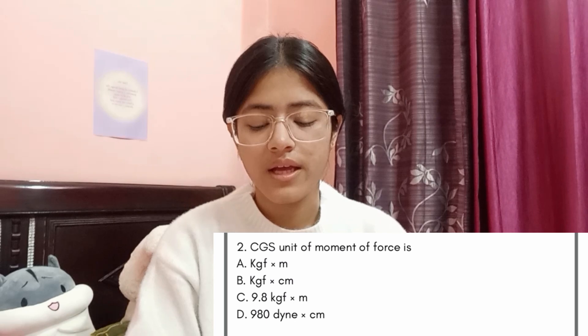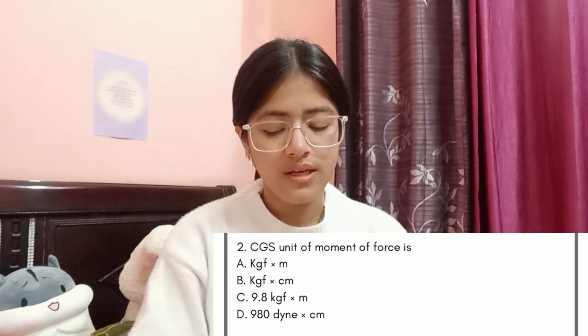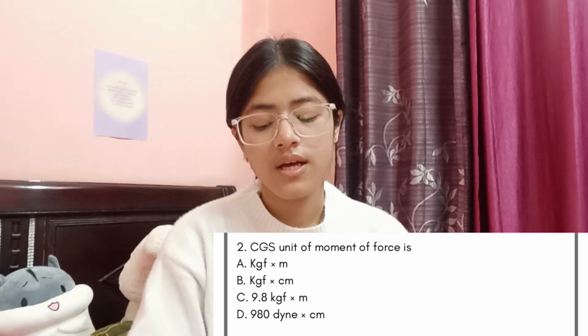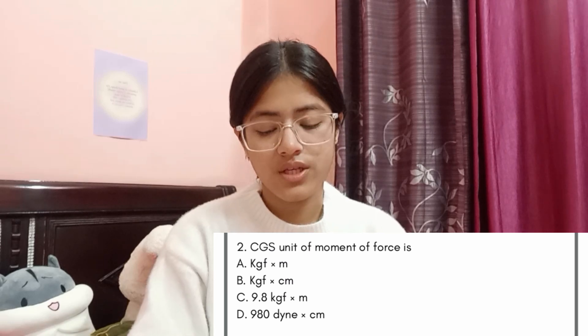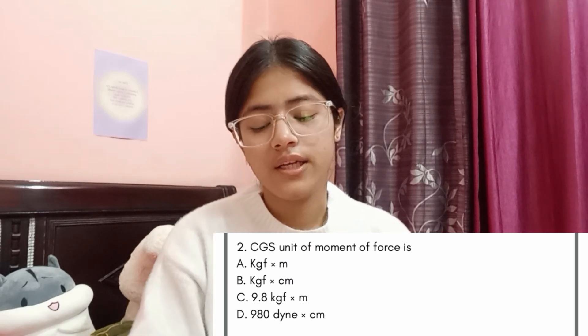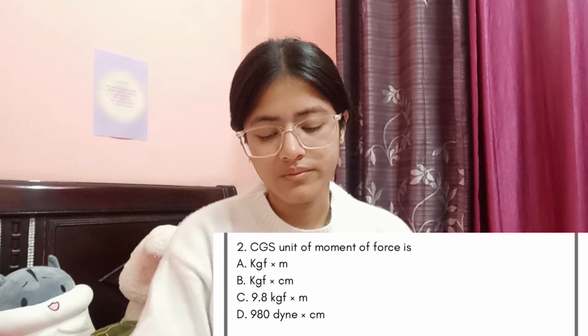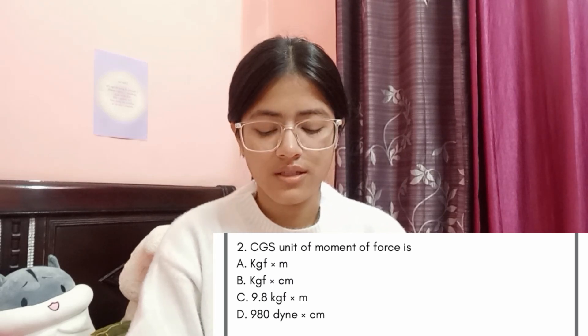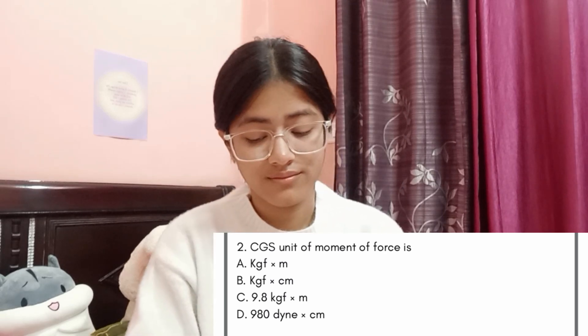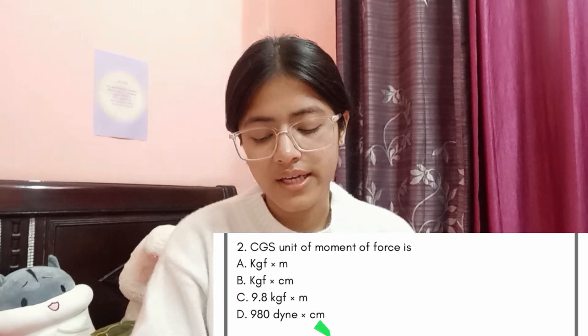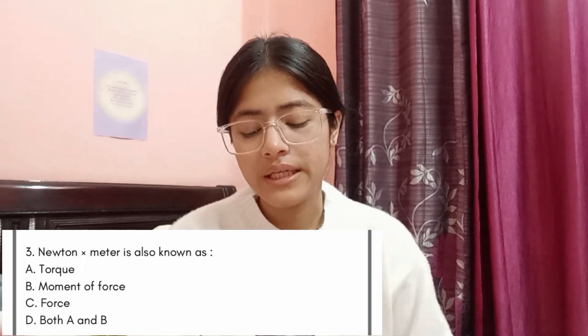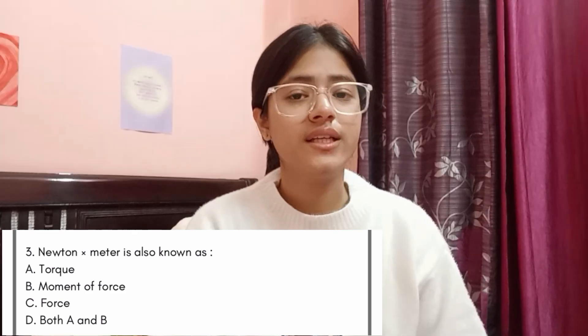The second question is: the CGS unit of moment of force is — Option A: kgf × meters, Option B: kgf × centimeters, Option C: 9.8 kgf × meters, Option D: 9.8 kgf × centimeters. The answer is Option D, 9.8 kgf × centimeters. Question 3: Newton × meter is also known as — Option A: torque, Option B: moment of force, Option C: force, Option D: both A and B. The correct answer is Option D, both A and B.